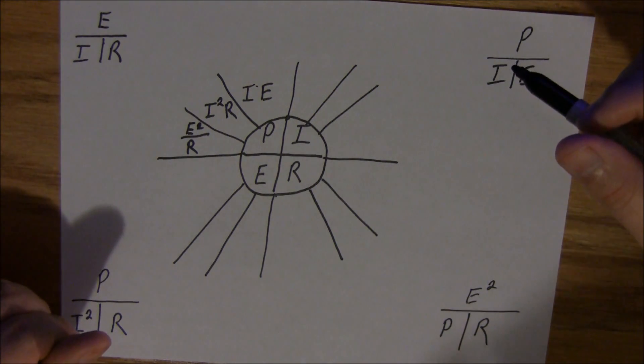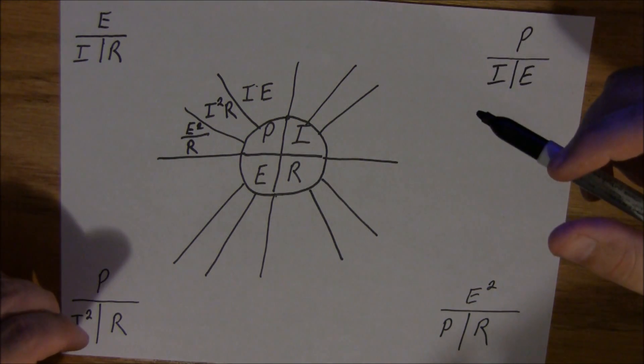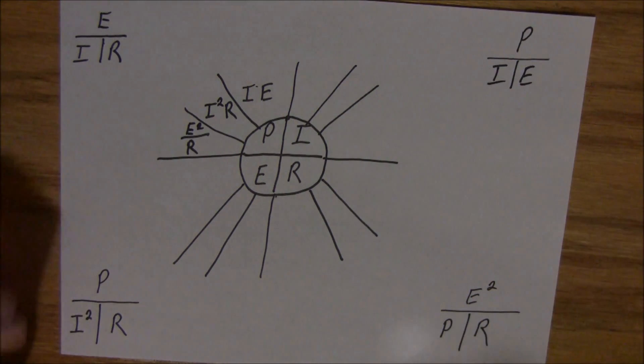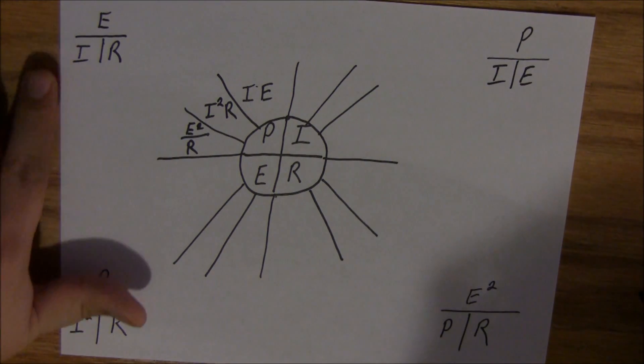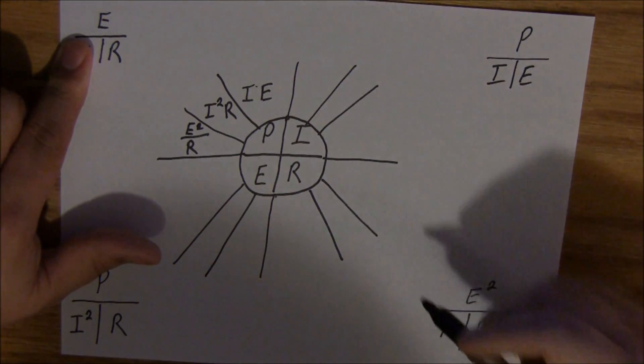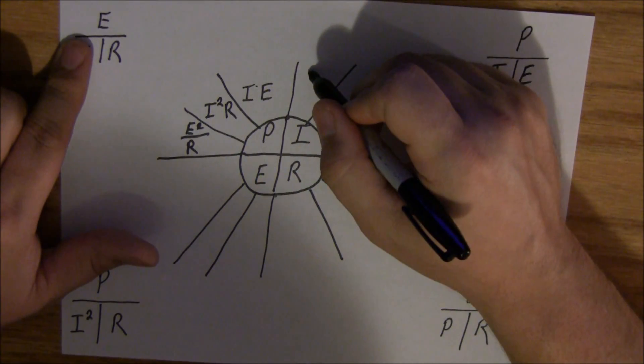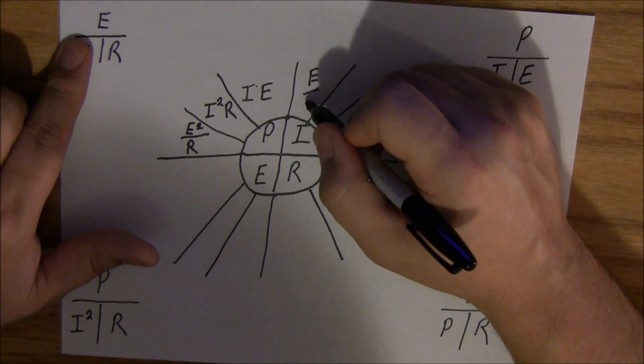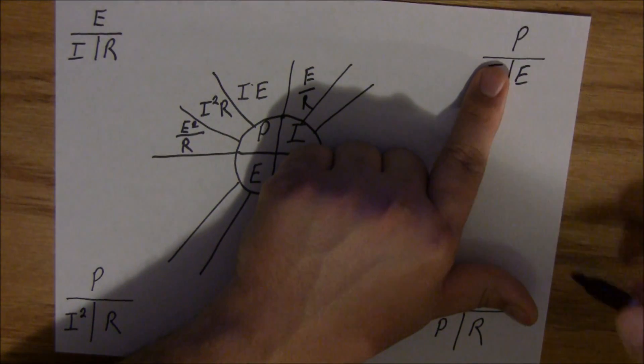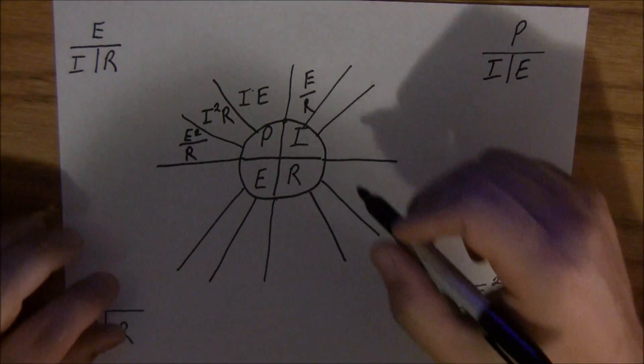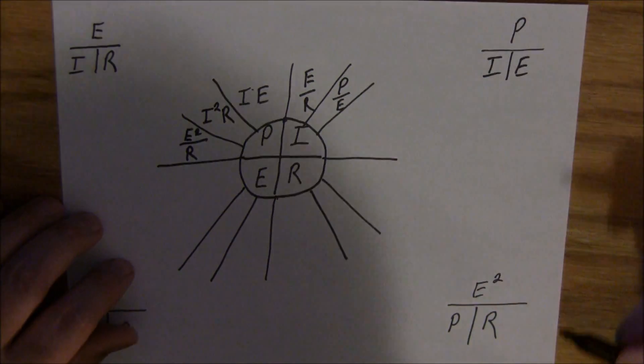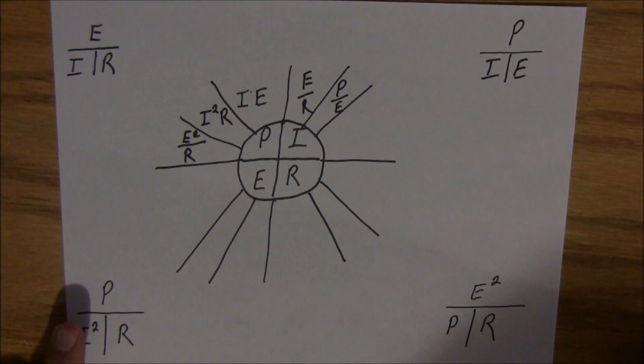Now if you want to find amps and you don't know what amps is or what I is, but you do know what voltage and resistance is. Well, easy peasy. Put your finger over the I. You want to find amps. So this tells us that it is E divided by R. If you cover this I up, I equals P divided by E.